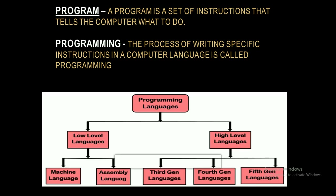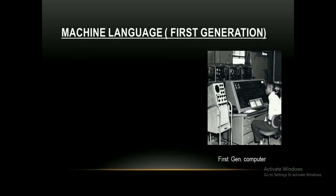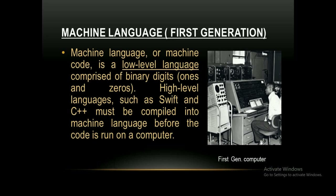Programming languages are classified into two types: low-level language and high-level language. Low-level language is further classified into two types: machine language and assembly language. High-level languages are classified into third-generation, fourth-generation, and fifth-generation languages. Machine language, or first-generation language, is a low-level language comprised of binary digits 1 and 0. High-level languages such as Swift and C++ must be compiled into machine language before the code is run on a computer.